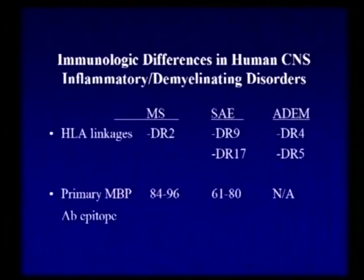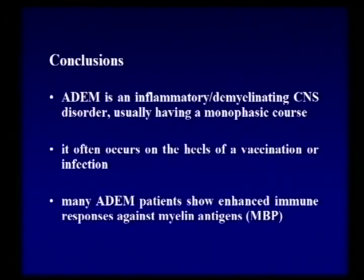To wrap up: ADEM is an inflammatory demyelinating disease of the central nervous system, usually a monophasic, one-time illness. It often occurs on the heels of a vaccine or an infectious illness. We think these triggers activate the immune system in an abnormal way to react to myelin, and these myelin basic protein-specific immune responses are what drive the disease. If we can study and understand how we get from trigger to disease, we may be able to block it or turn those responses off to the benefit of our patients.